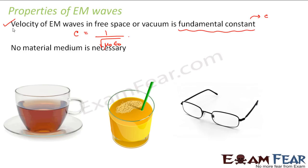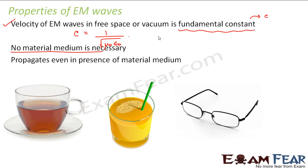The next property is that no material medium is necessary for electromagnetic waves. The electromagnetic waves can propagate in free space or vacuum — a material medium is not required. However, if a material medium is present, they can propagate even in the presence of a material medium. So whether a medium is present or not, electromagnetic waves can propagate.